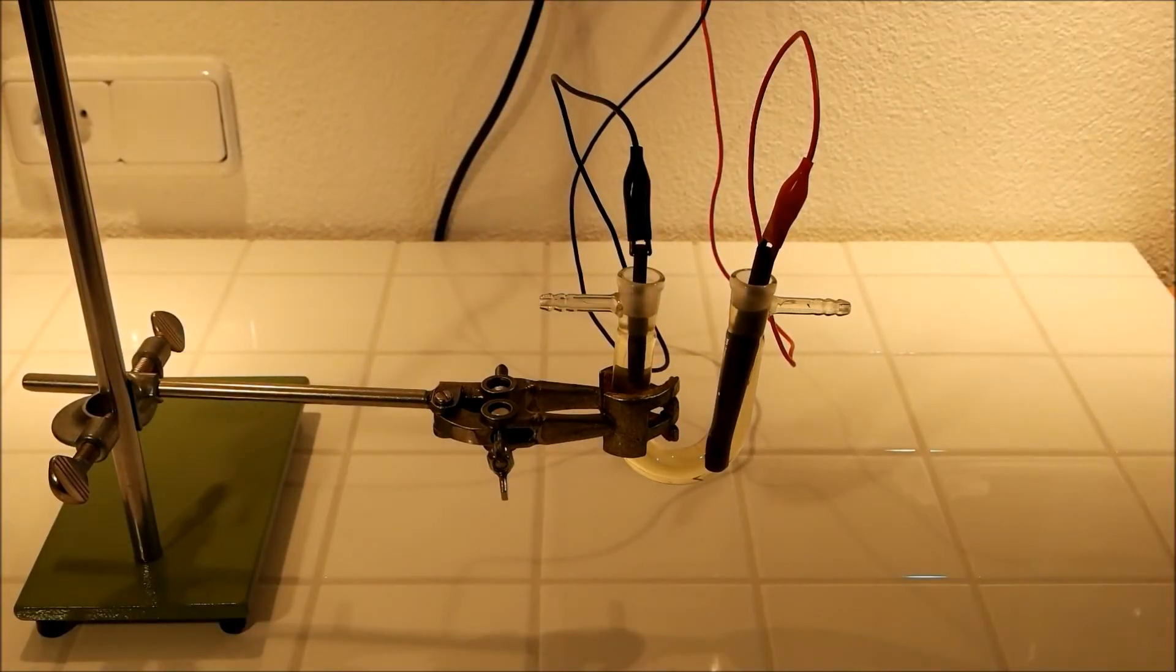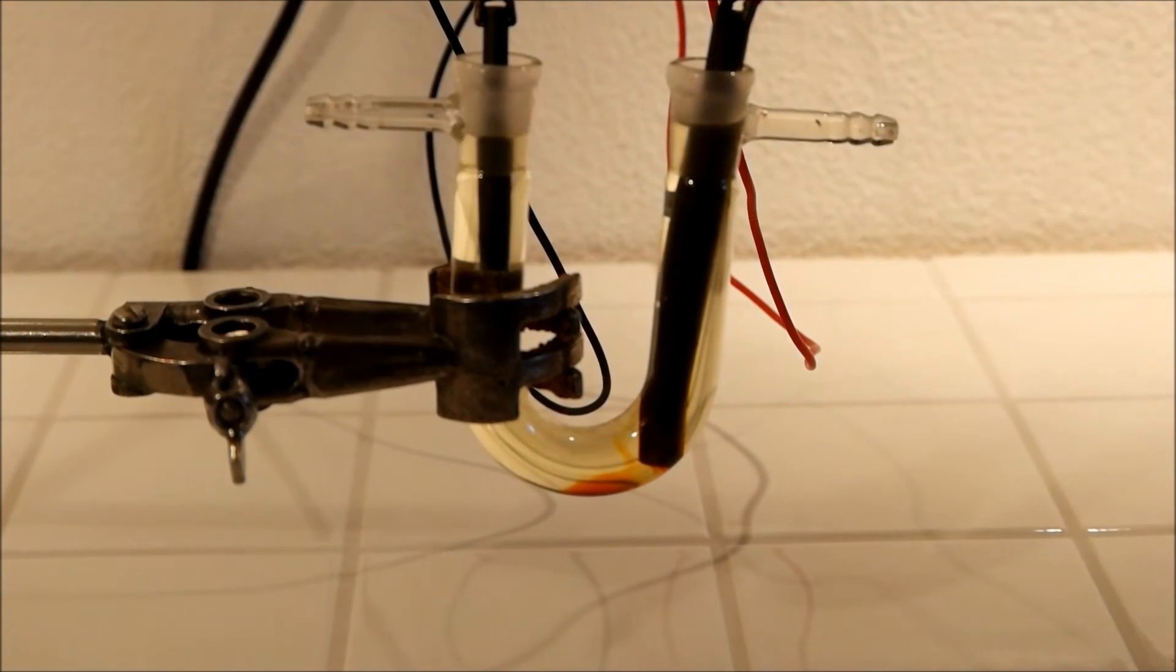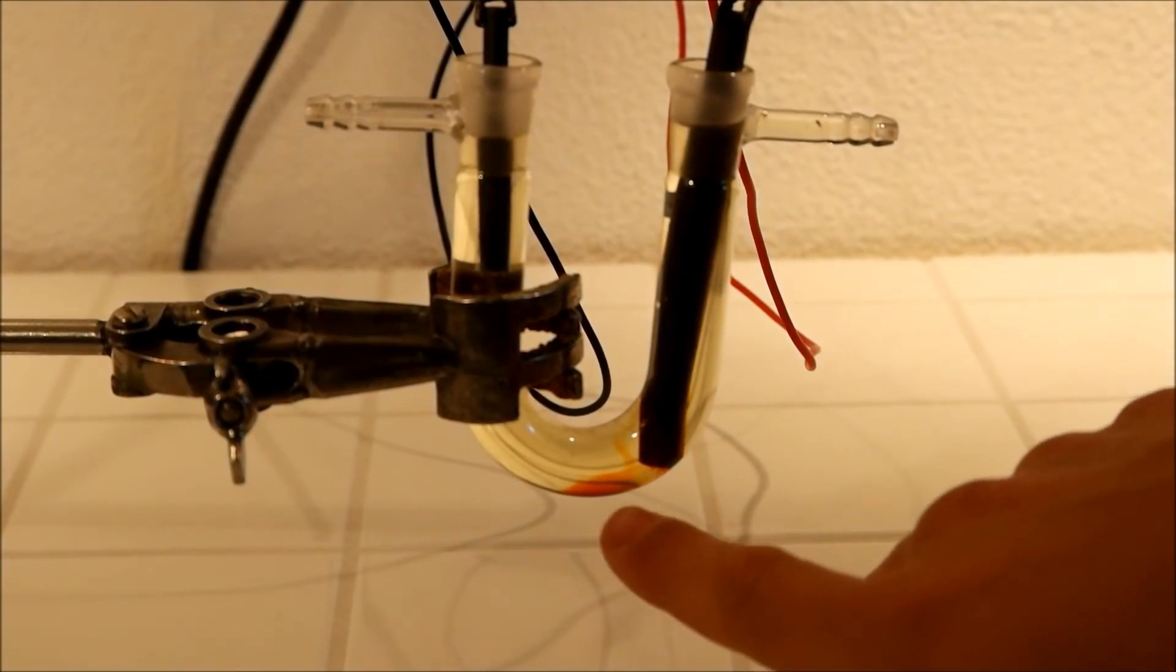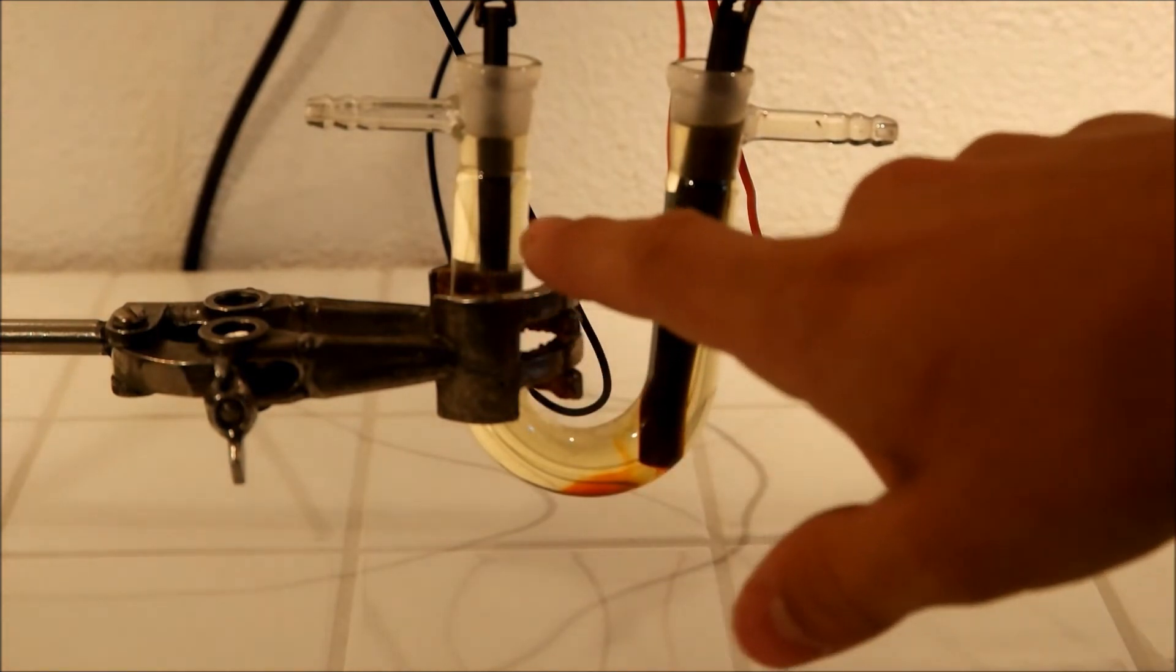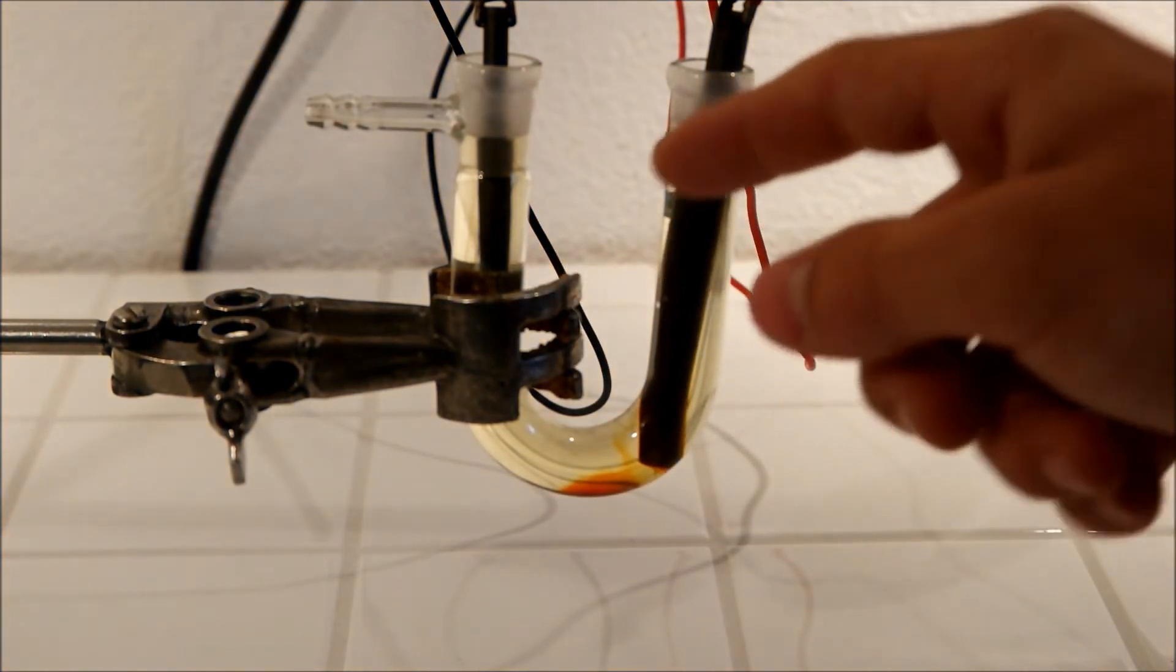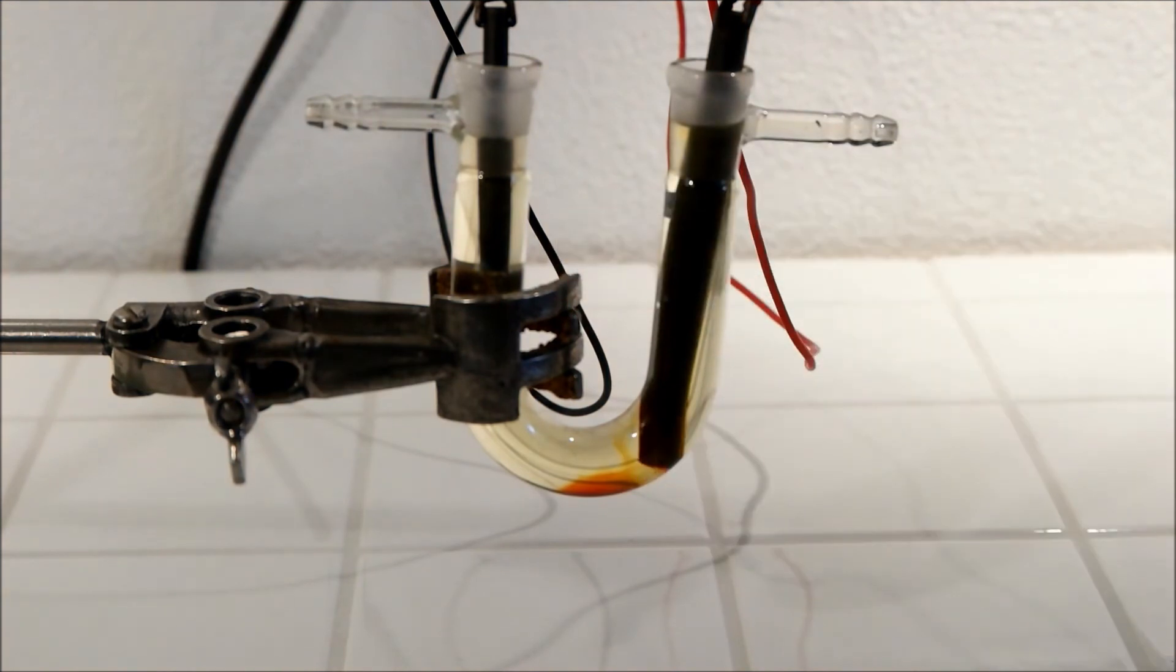Now you have to wait a few minutes and then you will see the reaction. On the positive pole you can see that a bit of iodine is produced and on the negative pole there is zinc depositing on the electrode.